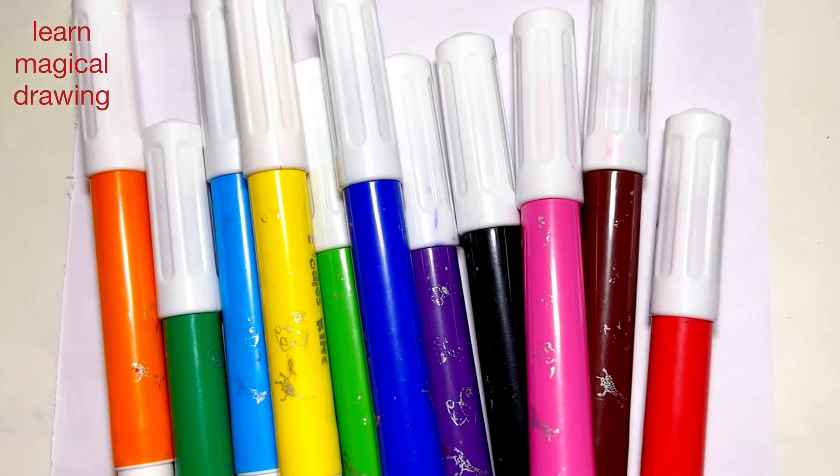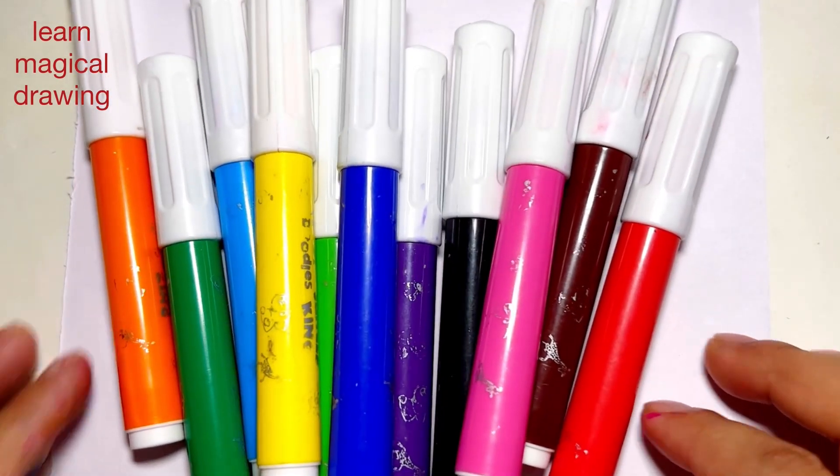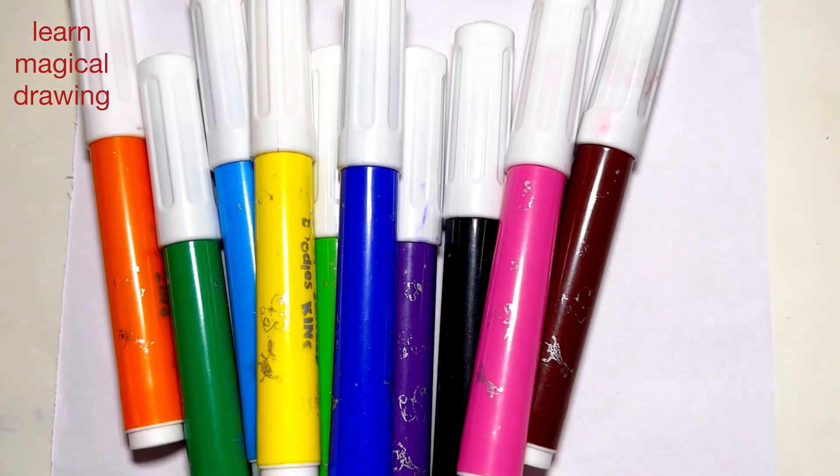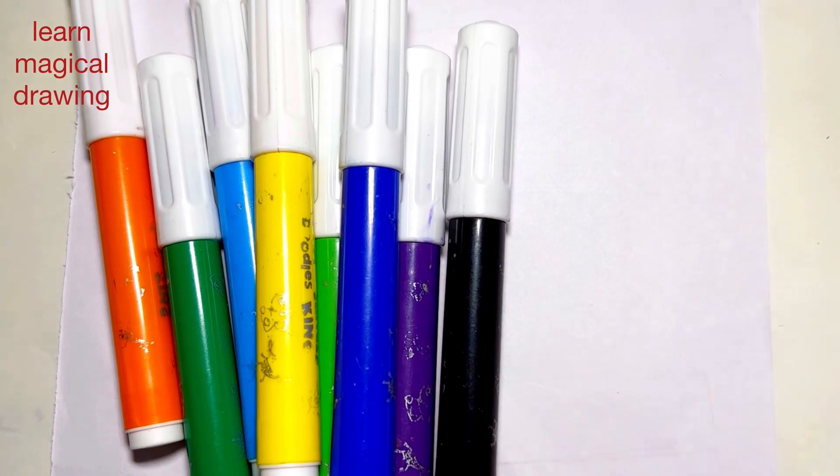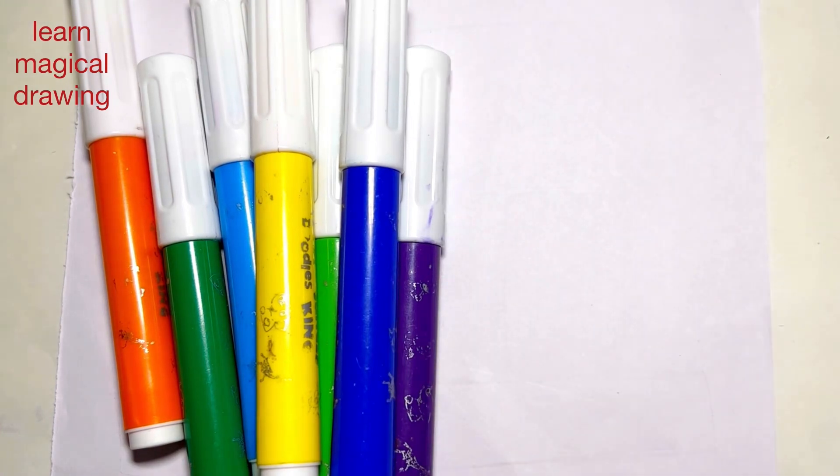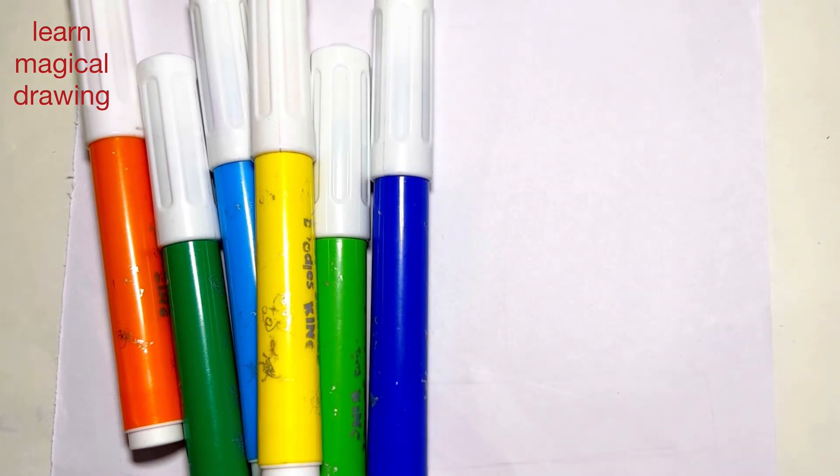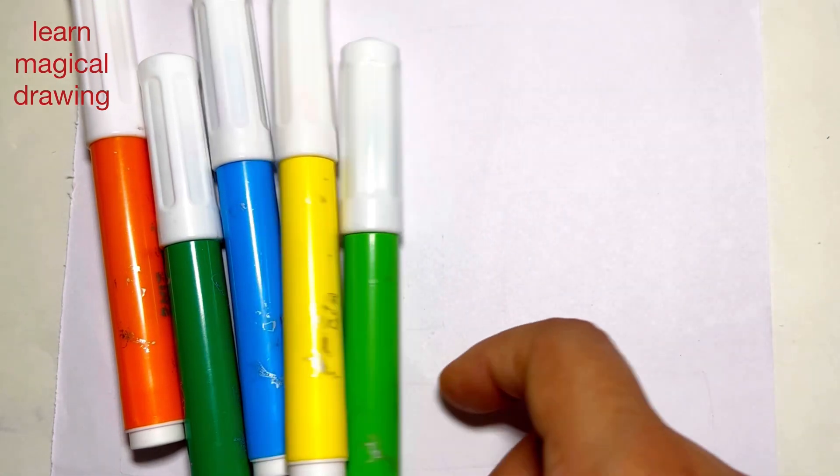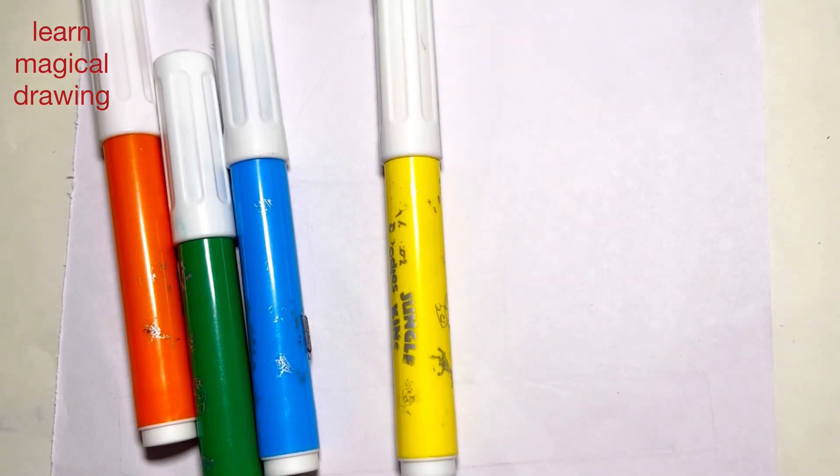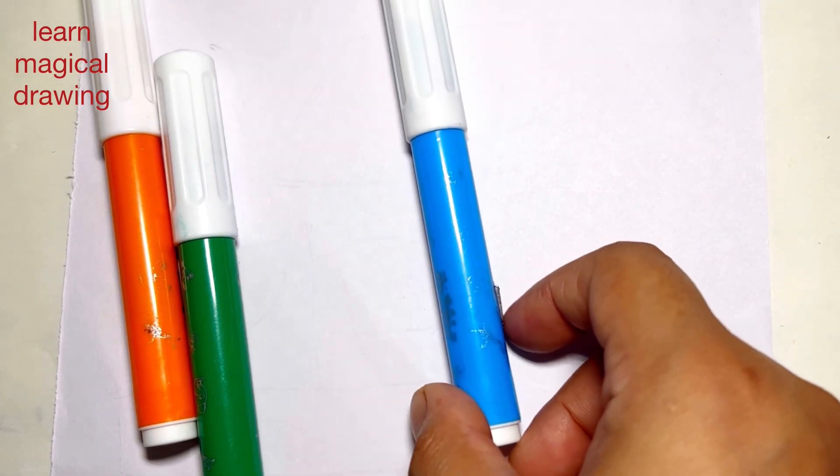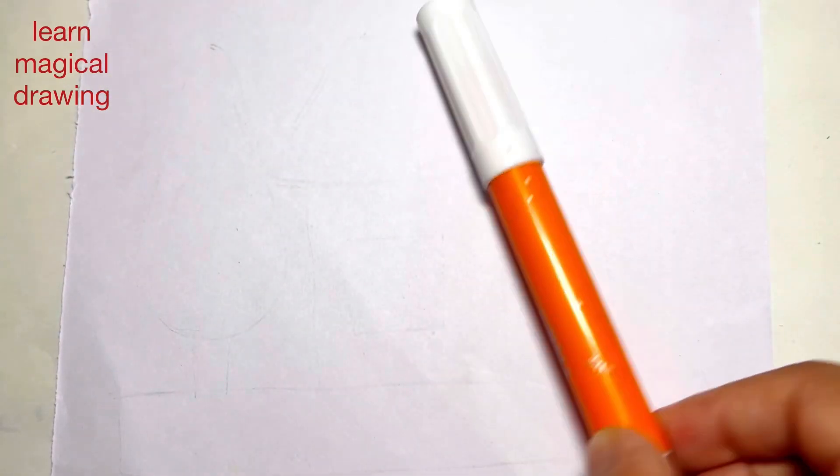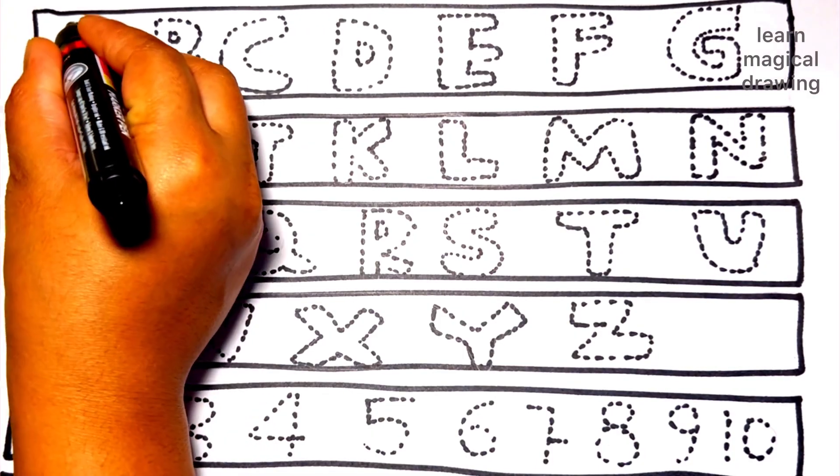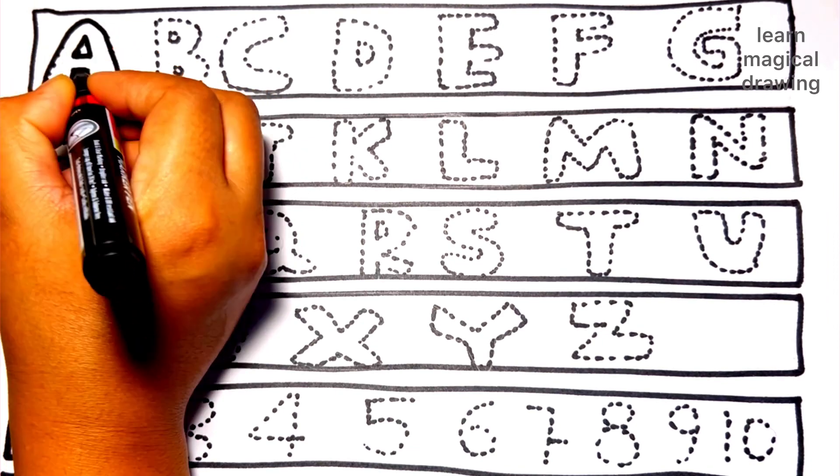Hello everyone, let's learn some colors: red color, brown color, pink color, black color, purple color, blue color, light green color, yellow color, sky blue color, dark green color, and orange color. Let's draw alphabets.